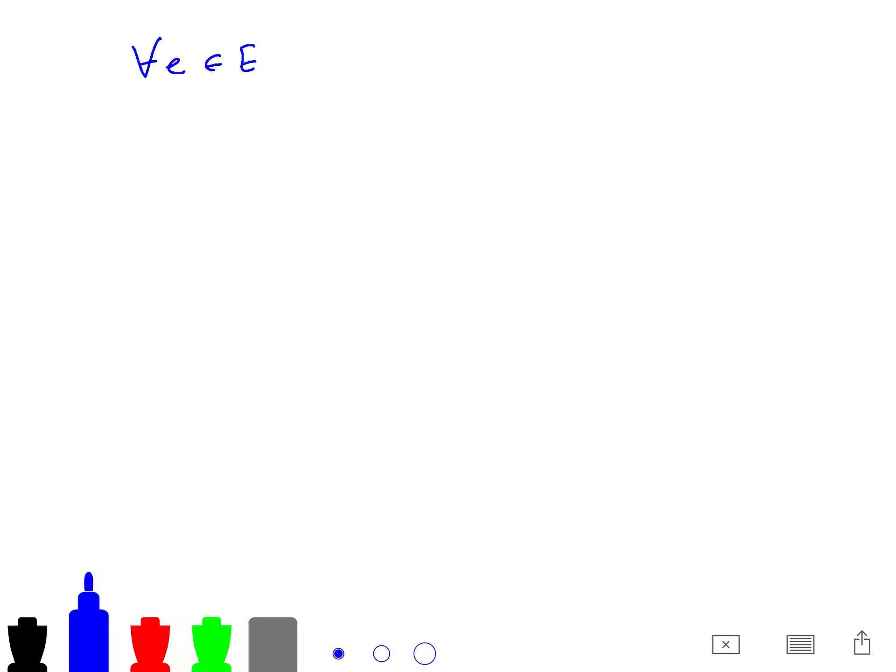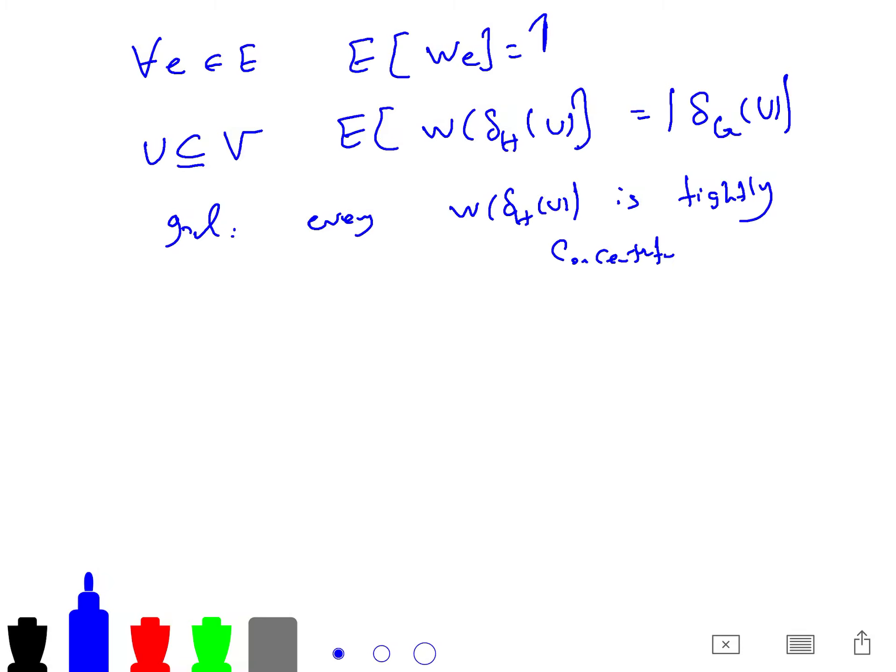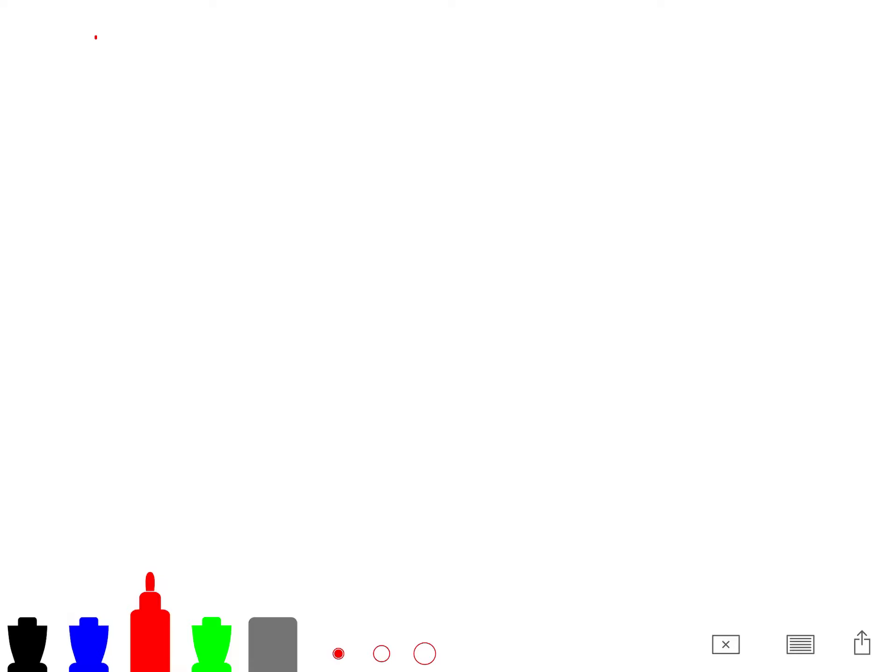And the claim, the claim is H perfectly approximates G in expectation. So for any edge, the expectation of the weight is 1. And for every subset of V, the expectation of the weight of the cut is just. So in expectation, the cuts are equal. And the goal is that every delta H of U is tightly concentrated.